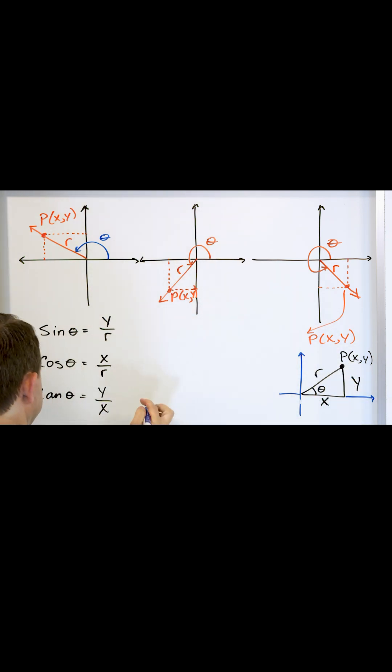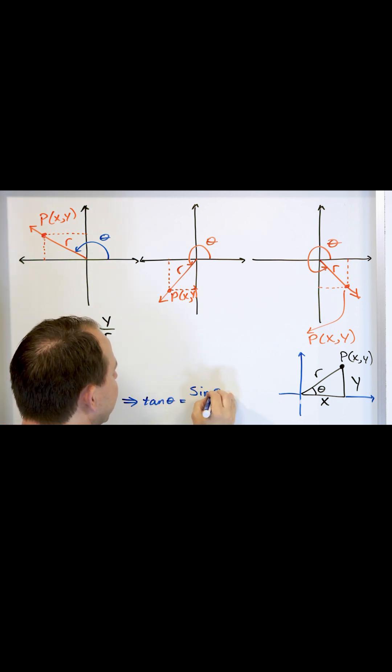Now another way that you can think about this, the tangent of an angle, a very useful trig identity, is to know that the tangent is equal to the sine of the angle divided by the cosine of the angle.